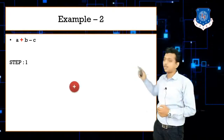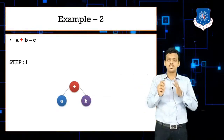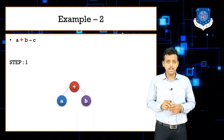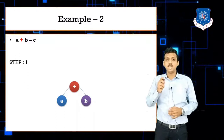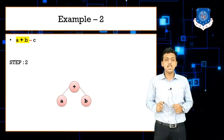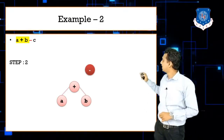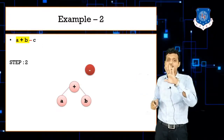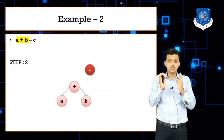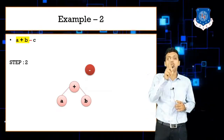For a + b - c, plus becomes the root node first: a on the left, b on the right. The term a + b is now solved. What remains is the minus operator, so we place minus next. On the left side of minus we have the already-solved term a + b, and on the right side we have c.